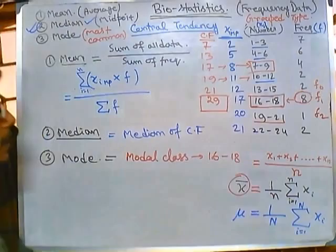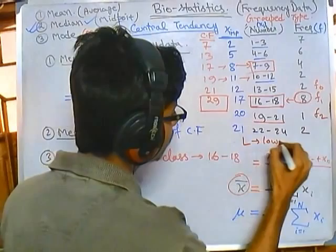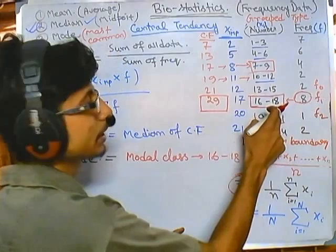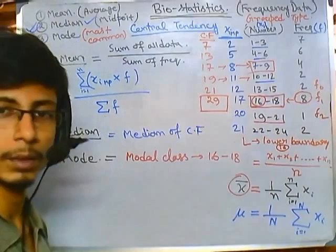Another value you need is L — the lower class boundary of the modal class. The modal class is 16 to 18, so the lower class boundary is 16. Therefore L equals 16.